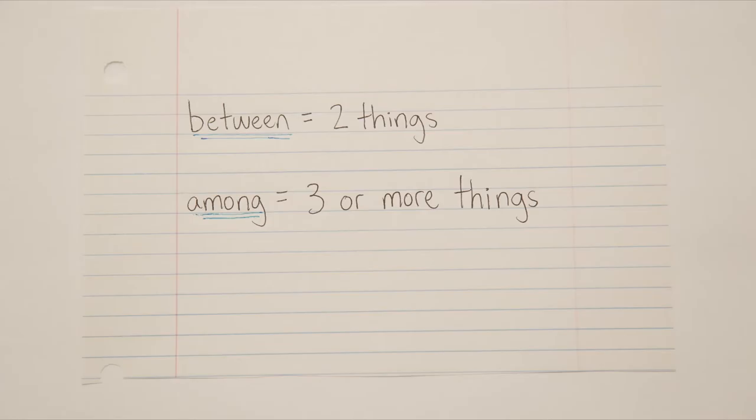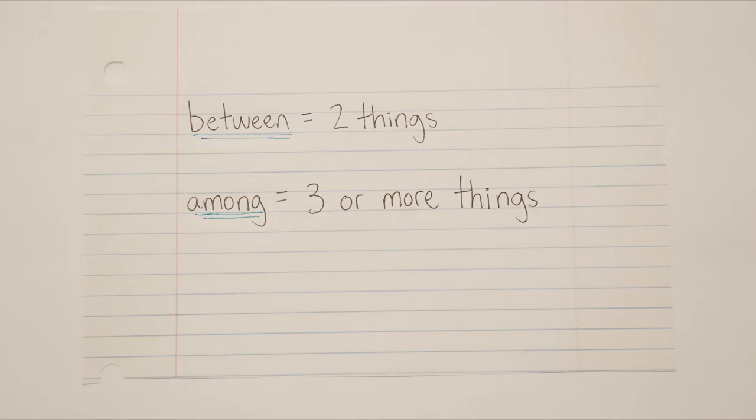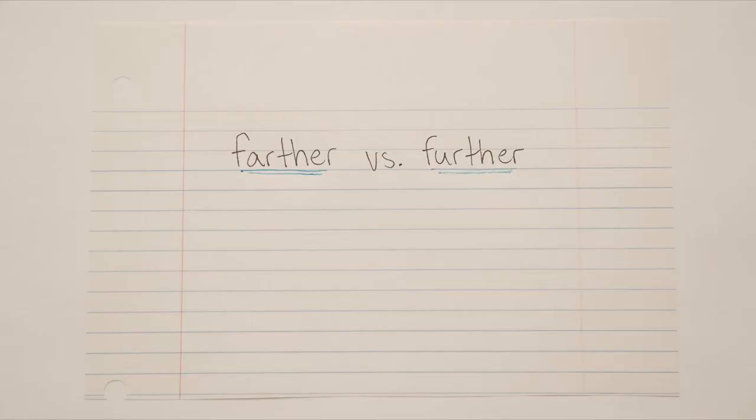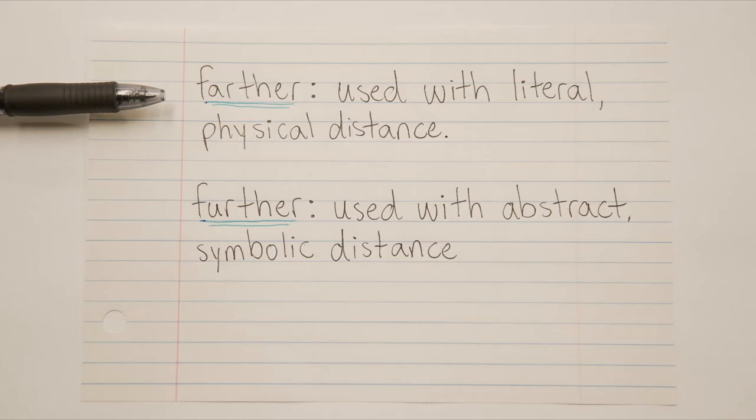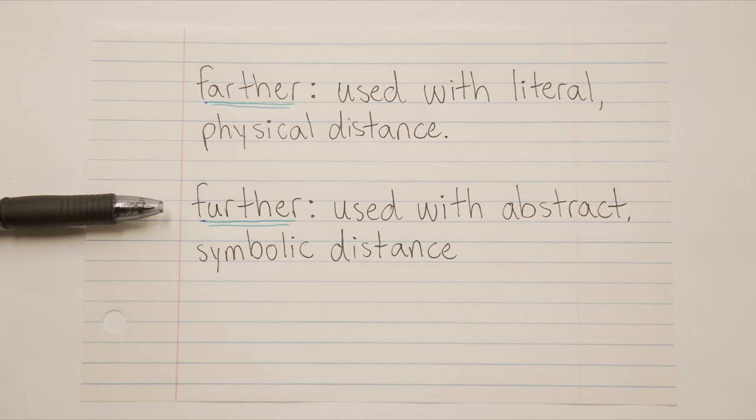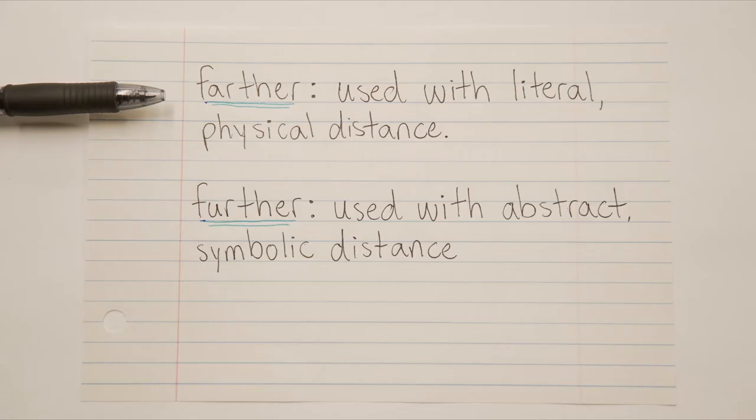The next pair is farther and further. Both of these words are used to measure distance. However, farther is used with literal, physical distance — distance we can measure. And further is used with more abstract or symbolic distance — distance that cannot be measured. So for farther, that's distance that can be measured.